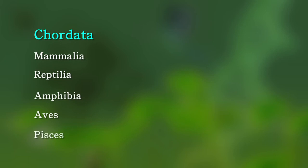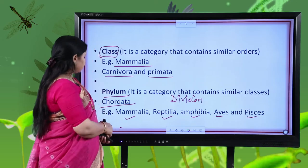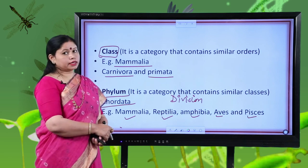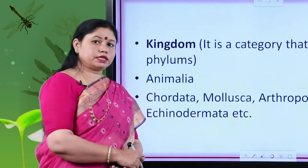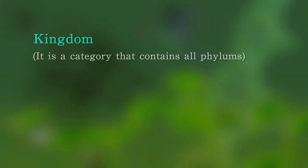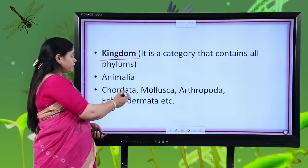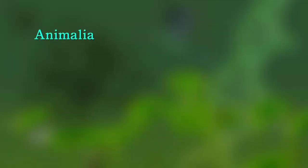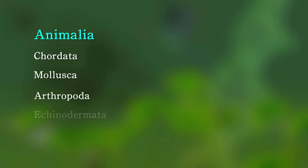You must be familiar with all these classes from your lower classes. Now let us discuss the most diverse group — kingdom. Kingdom is the category that contains all phyla. For example, kingdom Animalia contains all phyla like Chordata, Mollusca, Arthropoda, Echinodermata, Protochordata, Hemichordata, and many more.